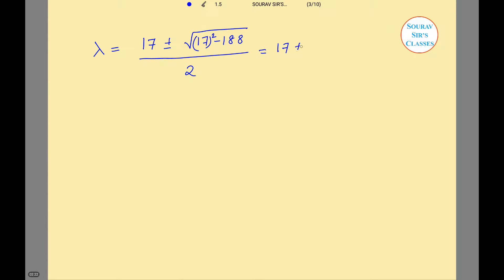17 ± √(17² - 188)/2 = (17 ± √(289 - 188))/2 = (17 ± √101)/2. So λ = (17 ± 10.05)/2.